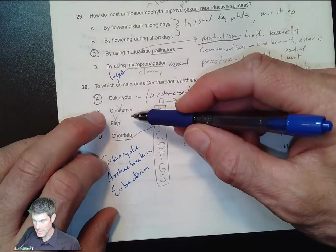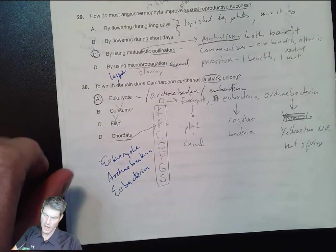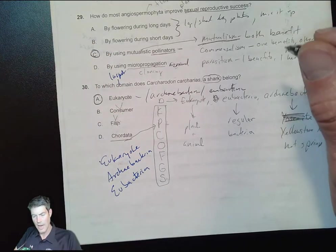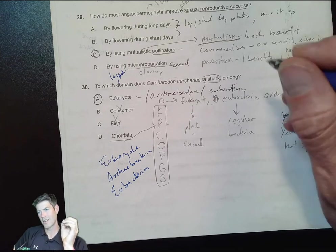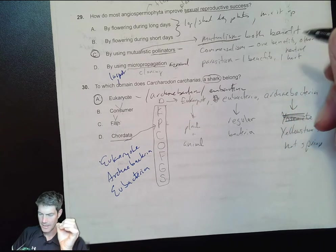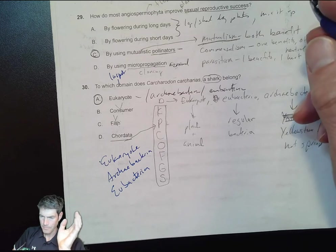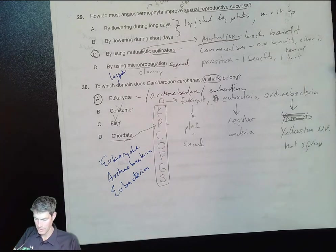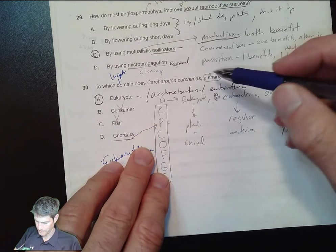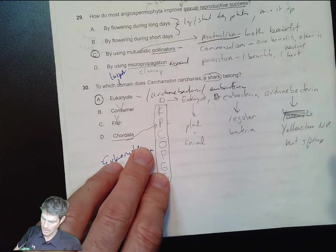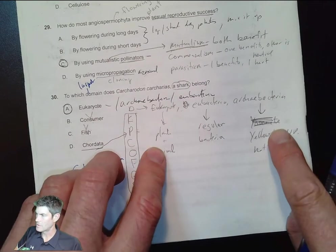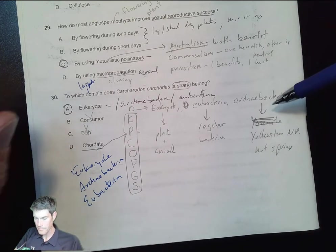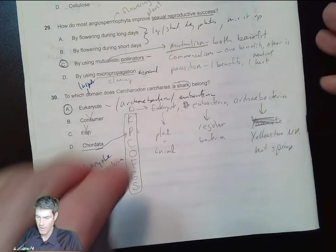Is it a fish? It is a fish - chondrichthyes. They're a special kind of fish because they don't have bones, just a cartilaginous skeleton. We think of bones with trout and salmon - those have actual bones. You've seen those pictures of Yellowstone National Park with all those beautiful colors in the pools and hot springs - that's because of the archaebacteria.